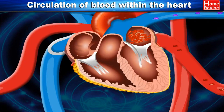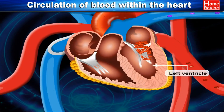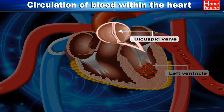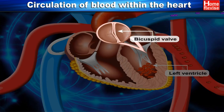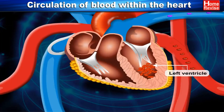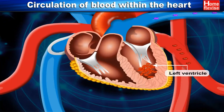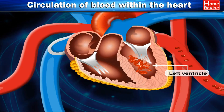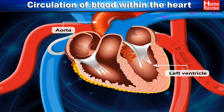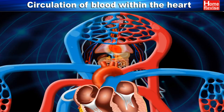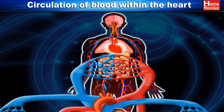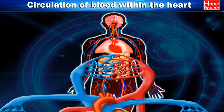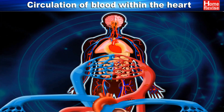This blood is then poured into the left ventricle, guarded by the bicuspid valve. The left ventricle contracts, pumping oxygenated blood to all parts of the body through the aorta, the largest artery.